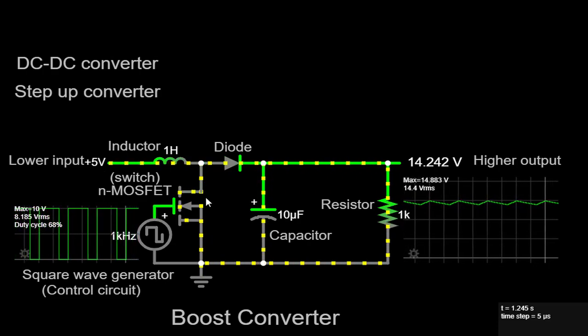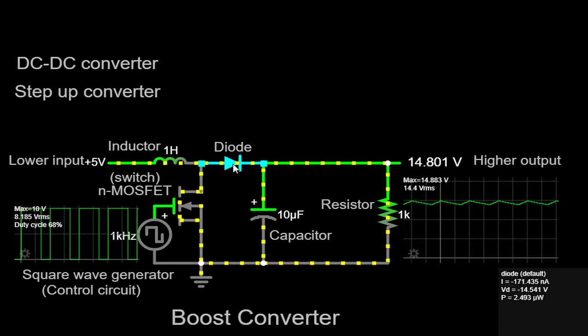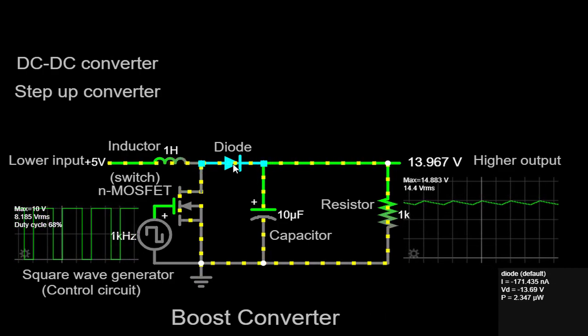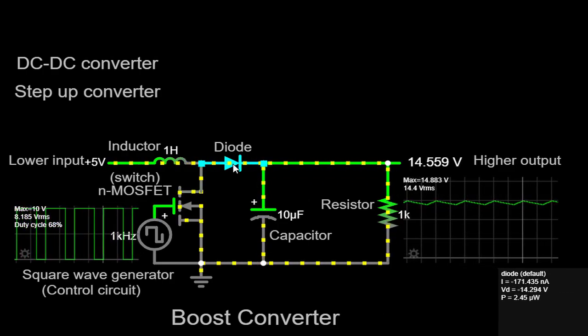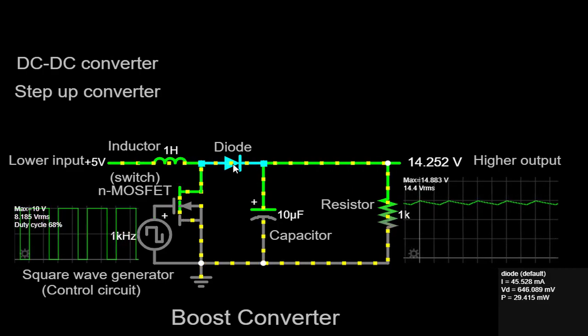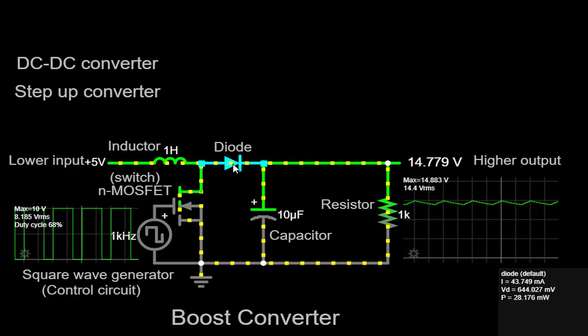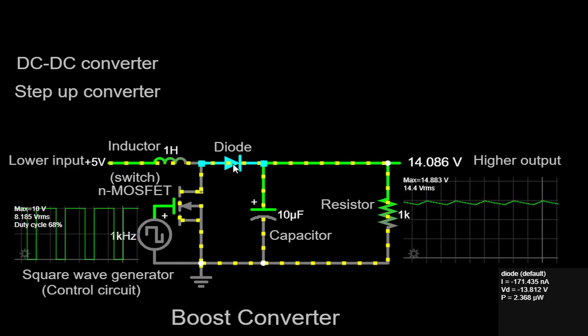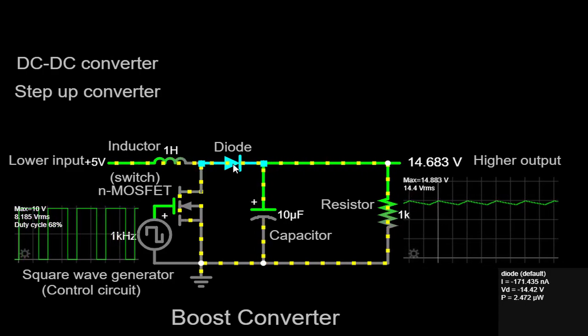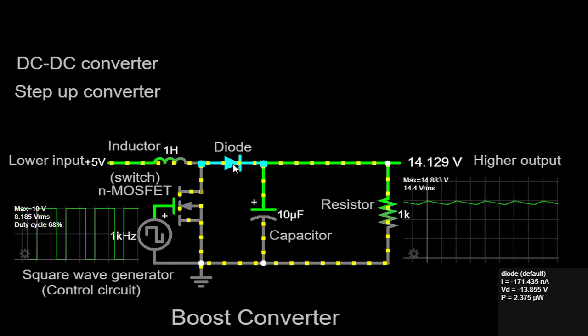The diode comes into play during the discharging phase. It ensures that the current flows only in one direction, preventing any backward flow that could disrupt the circuit's operation. The freewheeling diode provides a path for the inductor's energy to circulate, allowing a smooth discharge and preventing voltage spikes that could damage the MOSFET.